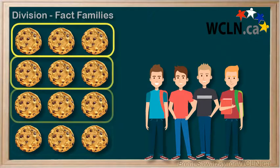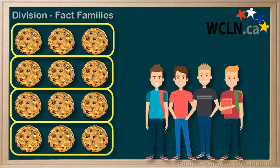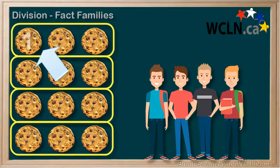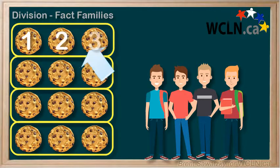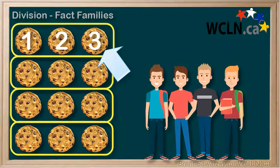Splitting it into 4 groups means that each friend gets a quarter of the cookies, which is 1, 2, 3. 3 cookies per friend.